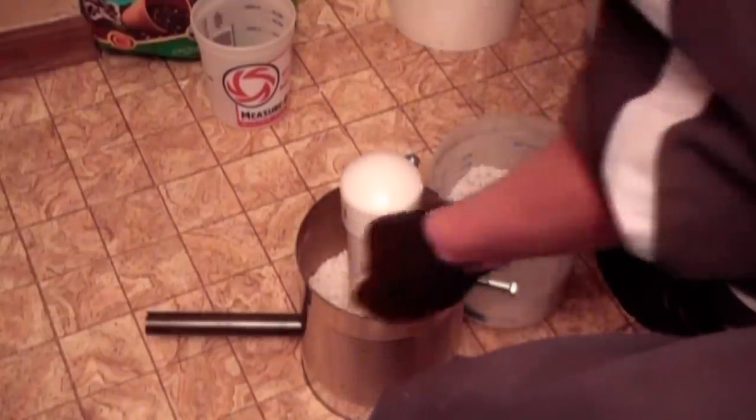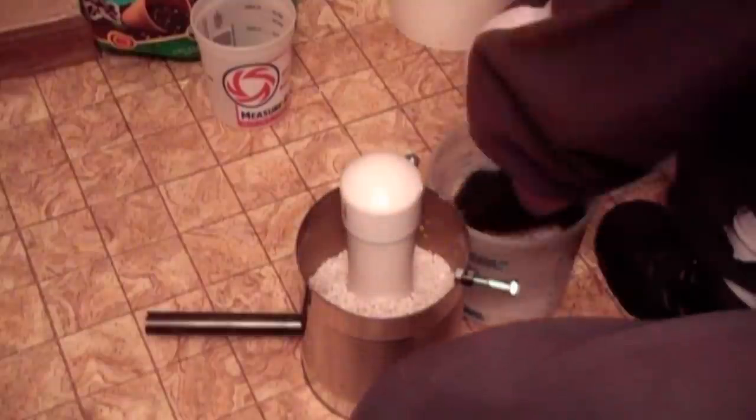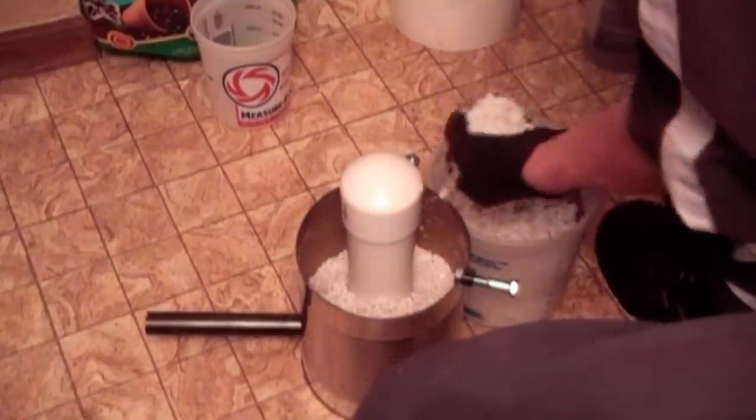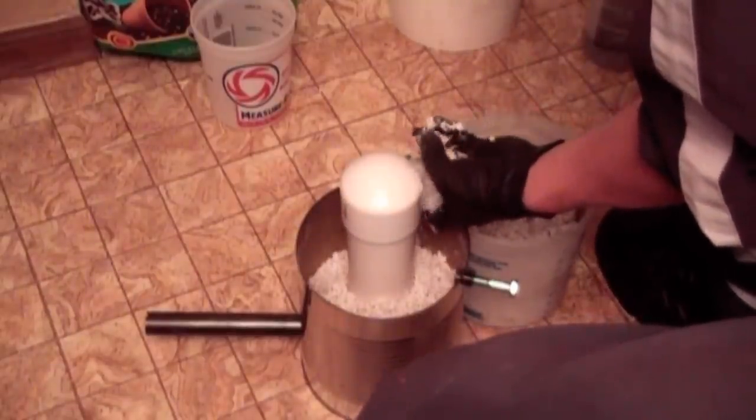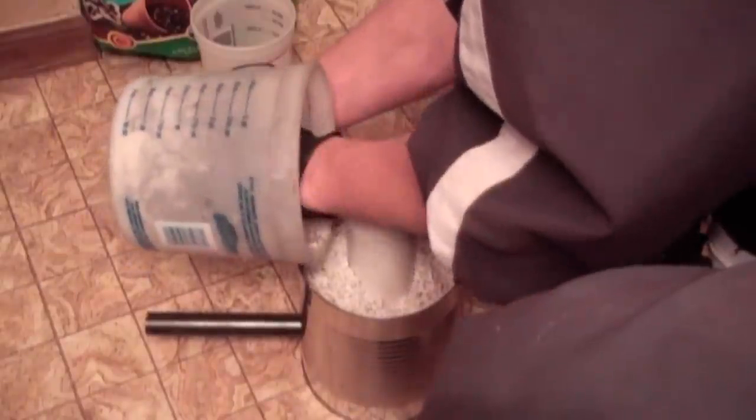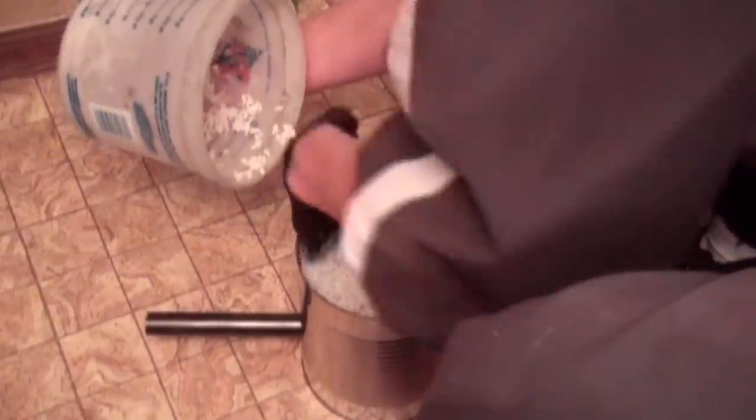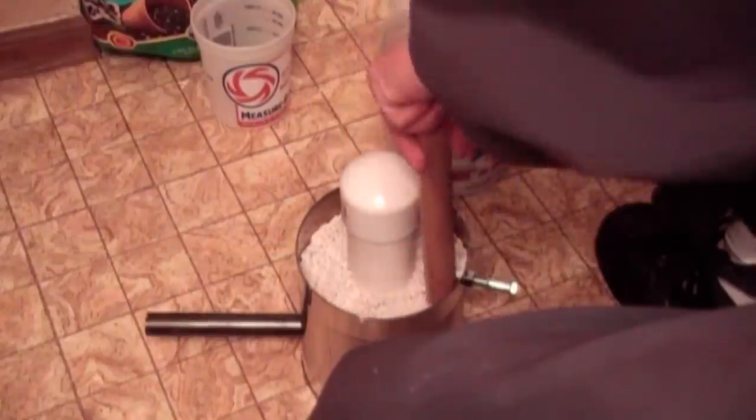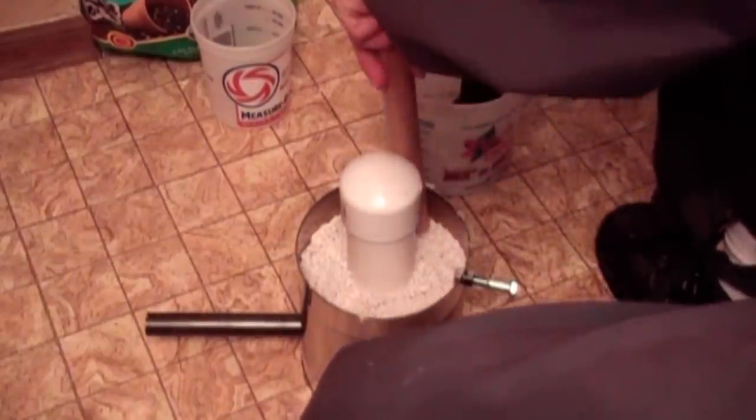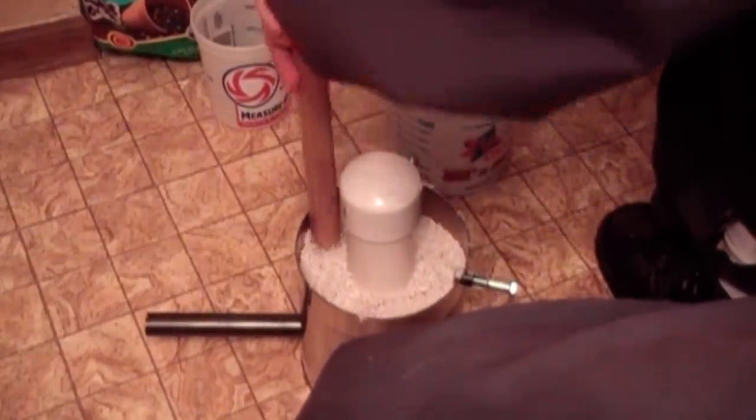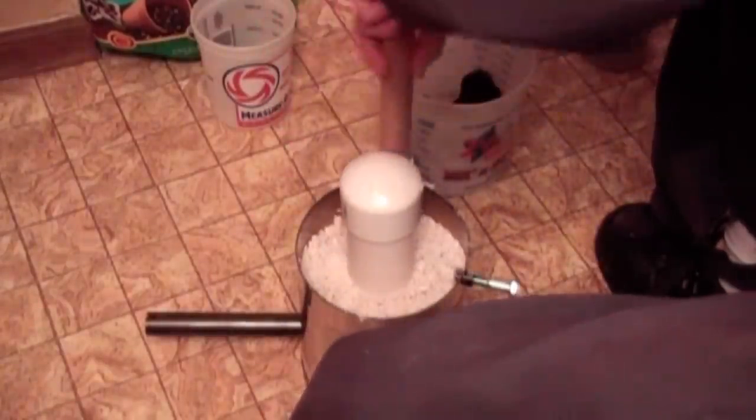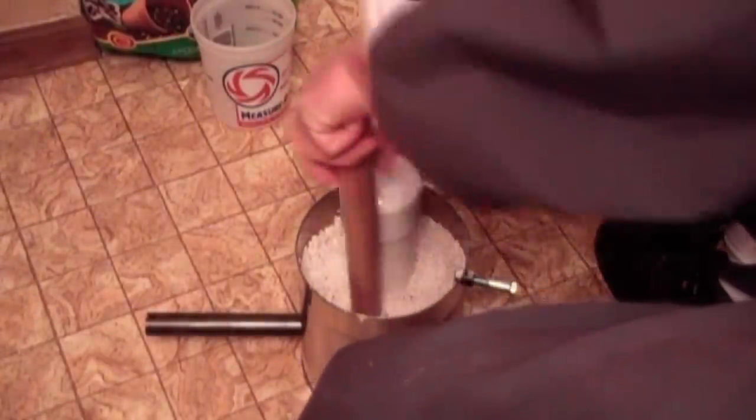Each layer is a small batch because with the addition of the plaster, this stuff sets up fairly quickly. One more batch brings the refractory lining all the way up to the top.